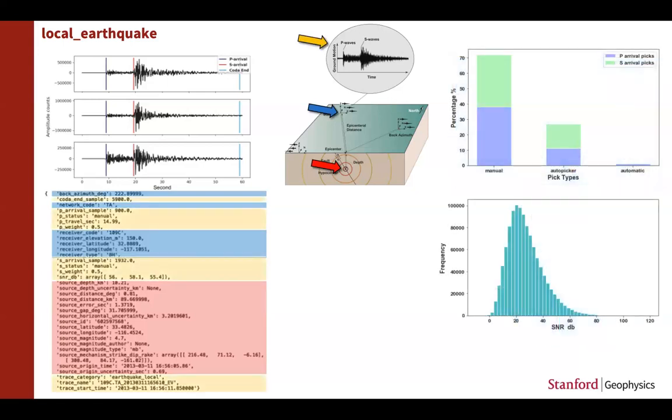The remaining attributes are related to the waveforms, such as P and S wave arrival times, how these arrival times have been picked, a rough estimation of the end of the coda, and the signal-to-noise ratio for each component.